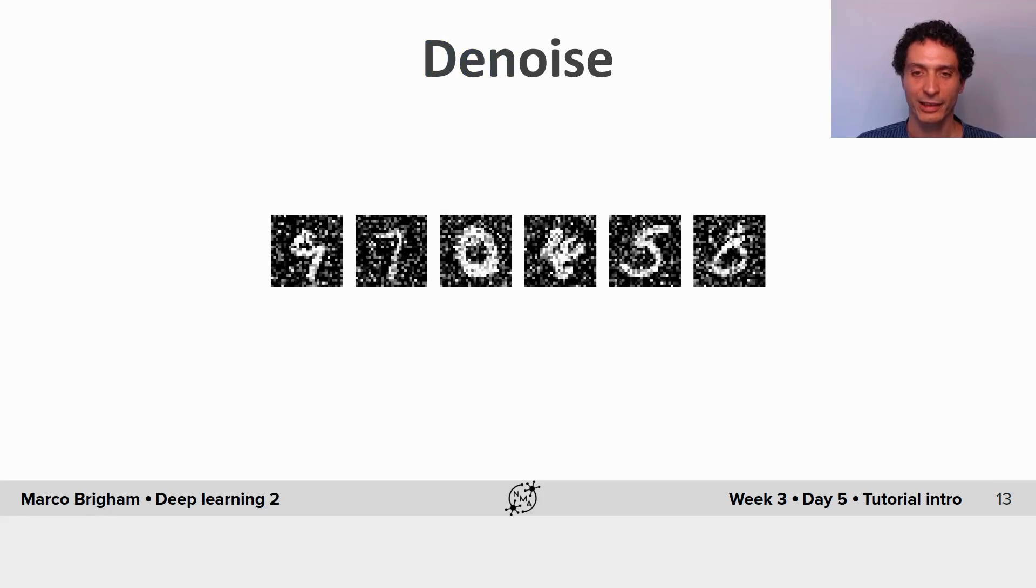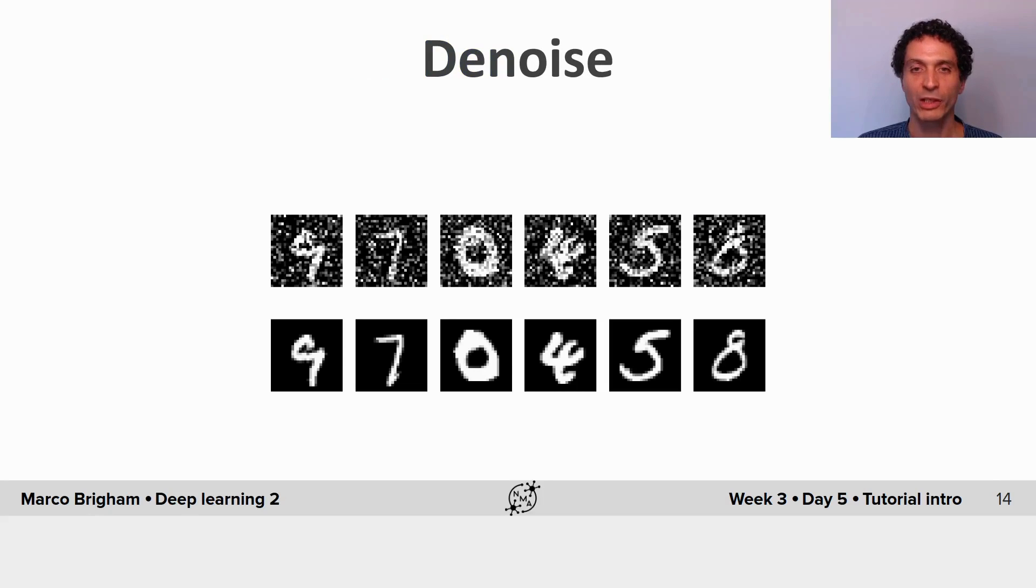And the denoise task is you take digits and you add noise and then try to reconstruct the noiseless versions. So in this task you try to see the signal, the digits, from the noise, and it requires you to have an idea of what handwritten digits look like.